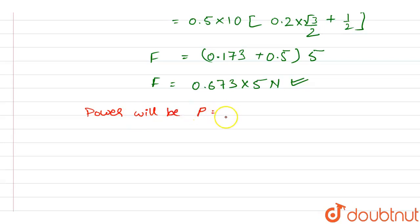So the force is 0.673 times 5 Newton and the velocity is 5. So the power will come out to be 16.825 Newton meters per second.